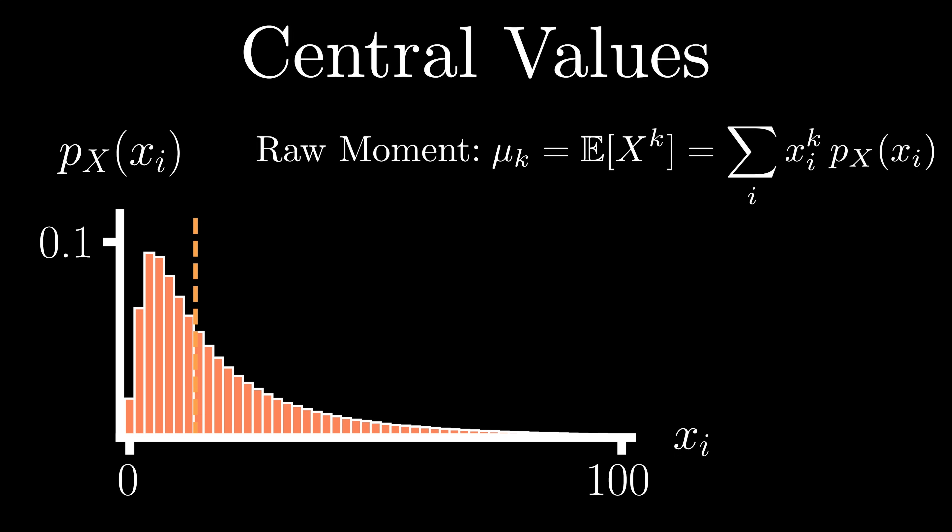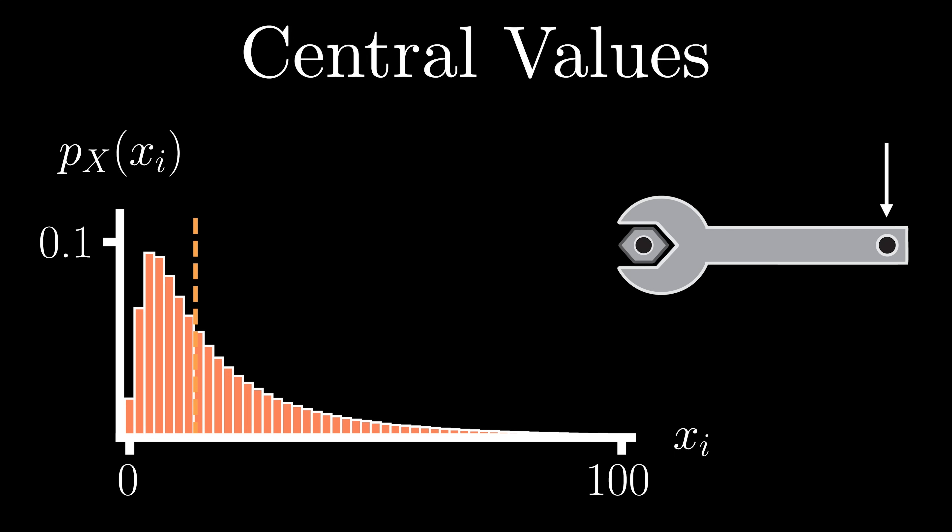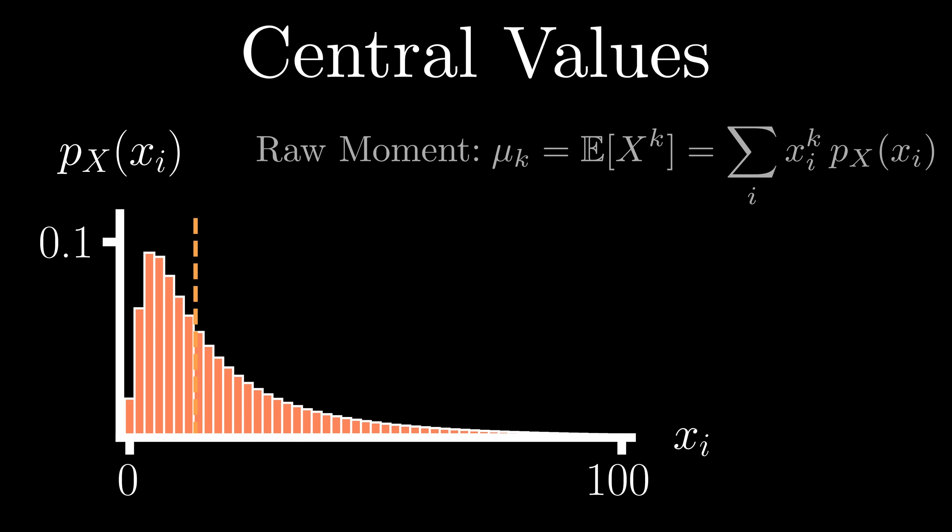Now one way to view a raw moment is as a weighted average, but an alternative way to view it, and the way that I prefer, is that we are computing the total moment of our distribution relative to an axis point of zero. As such, if we go back to the example of a wrench, each outcome X represents our moment arm or distance, and each probability is our physical quantity. Now the most famous raw moment is its first one. It is the mean or expected value of X, where we weight each possible value of X according to its probability of occurrence.